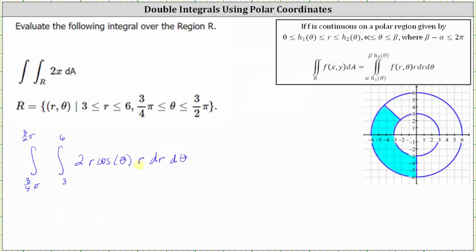Let's go ahead and rewrite this. r times r equals r squared, and therefore the integrand is 2r² cosine theta. Now we need to find big F of 6 minus big F of 3. Let's evaluate this on the next slide.